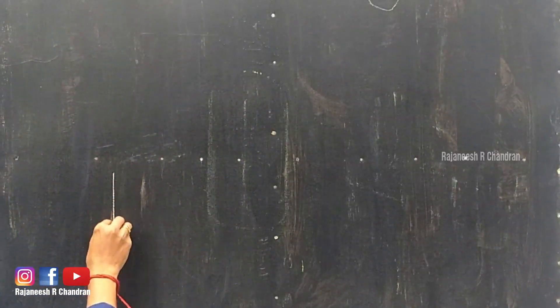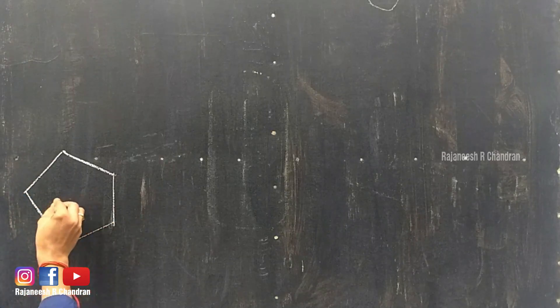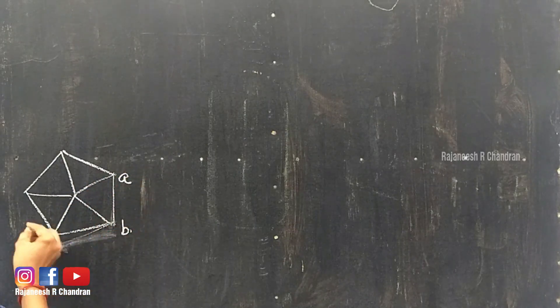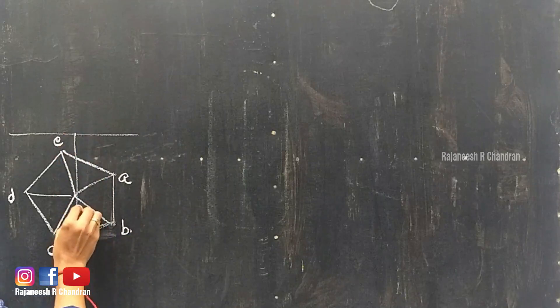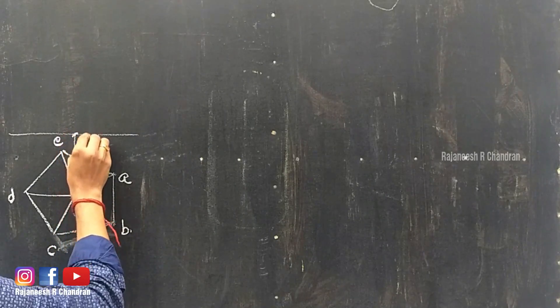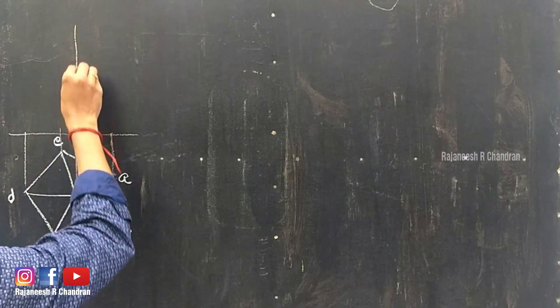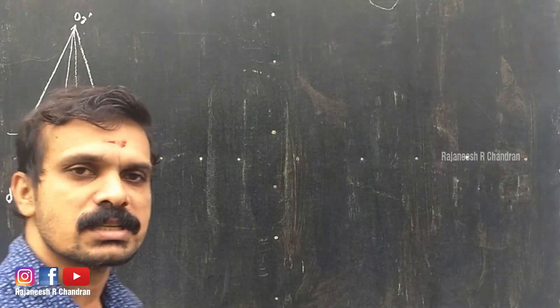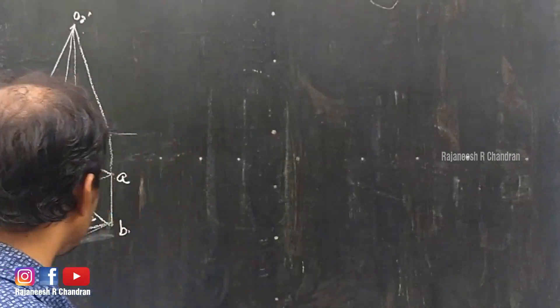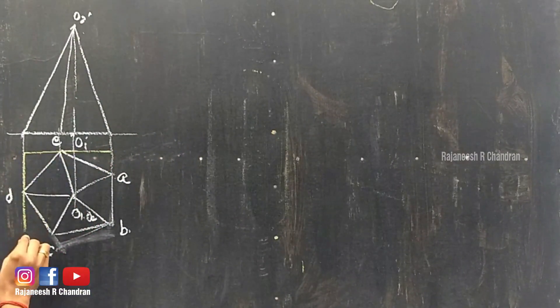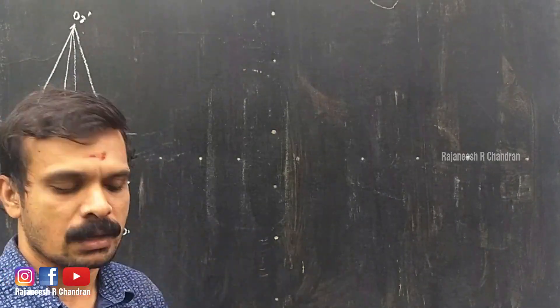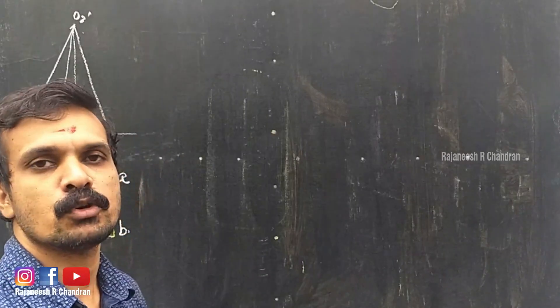In the top view you can see the pentagon. This is the orthographic projection of the pyramid. The first step is to enclose the pentagon in the rectangle. Since it is placed on the ground in the top view, you can see the pentagon. In the top view it is on the HP.